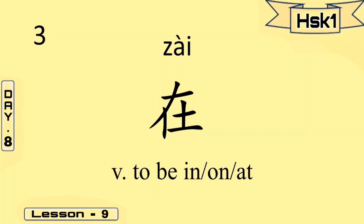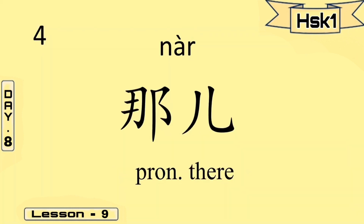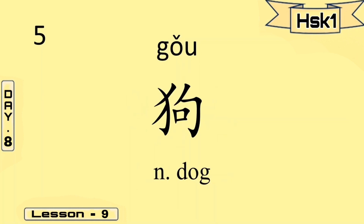The third one — to be in, on, at — we use the word sai, sai. The fourth one is nar, nar — that means dia. The next one is go, go — that means a dog.